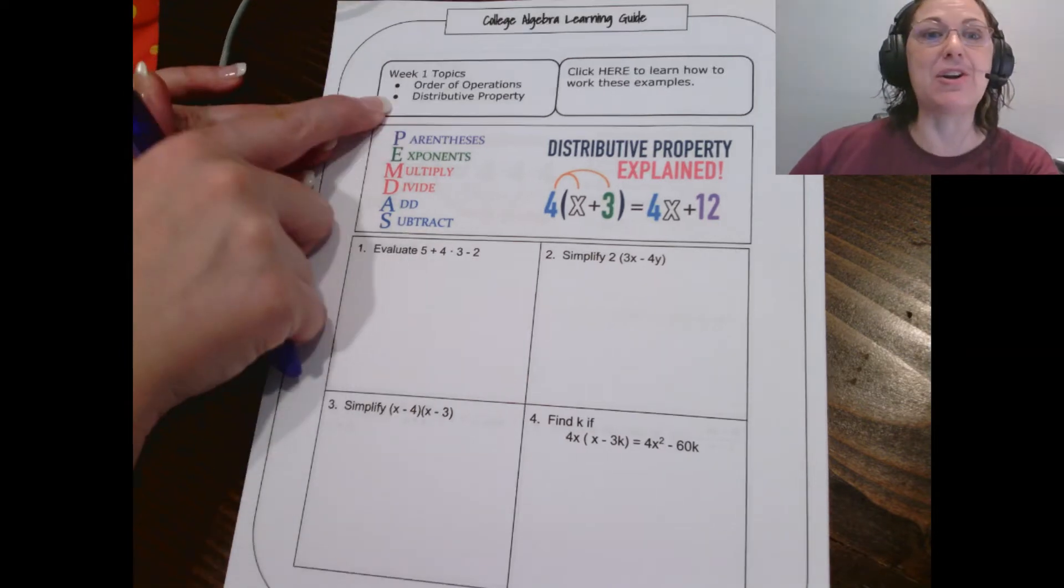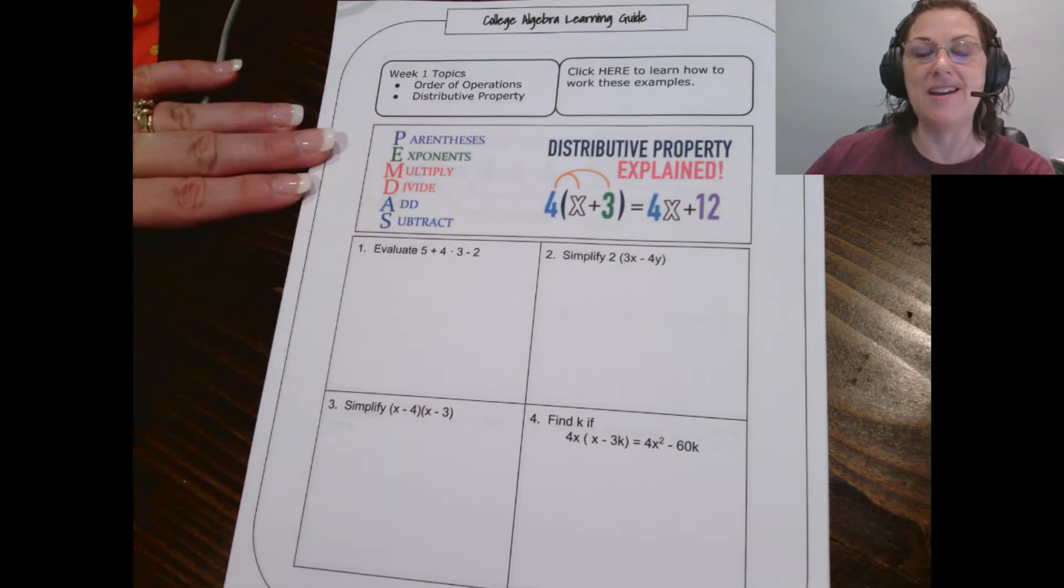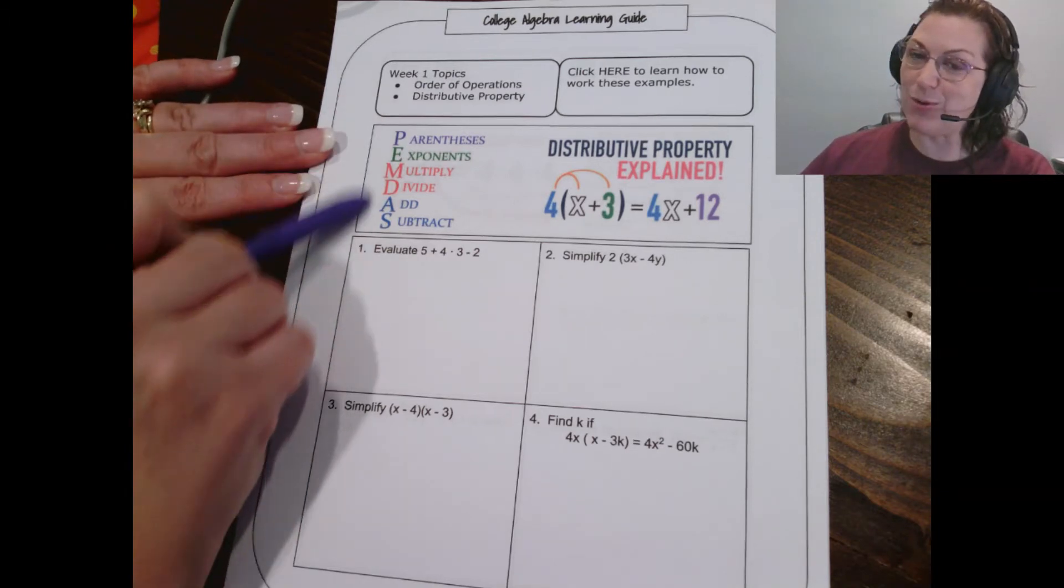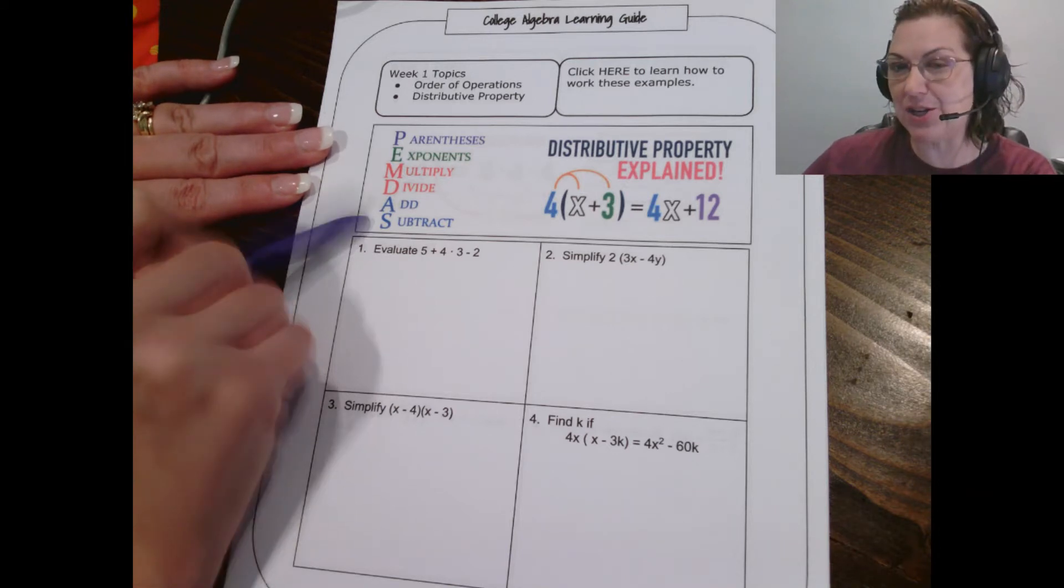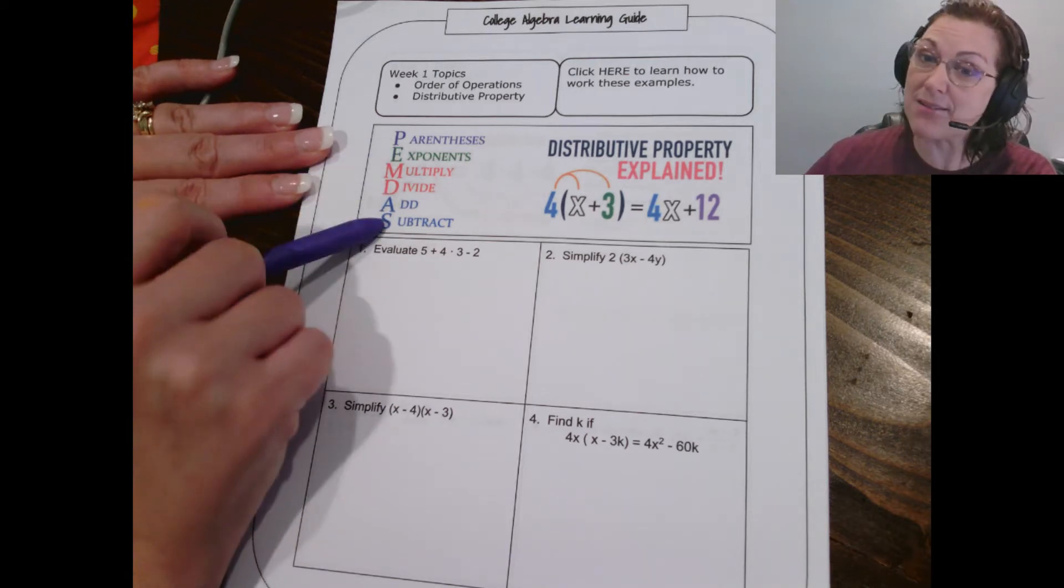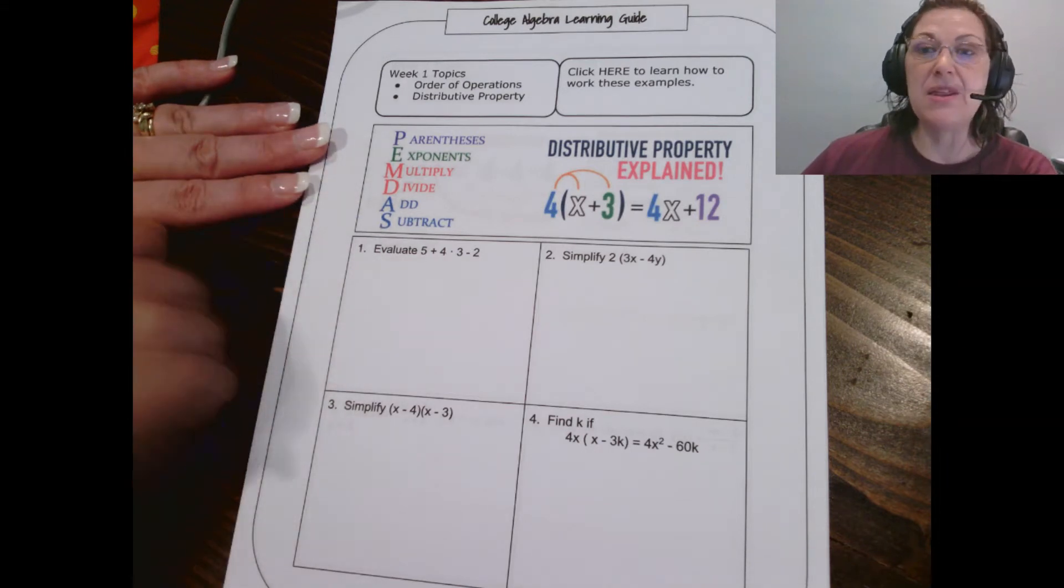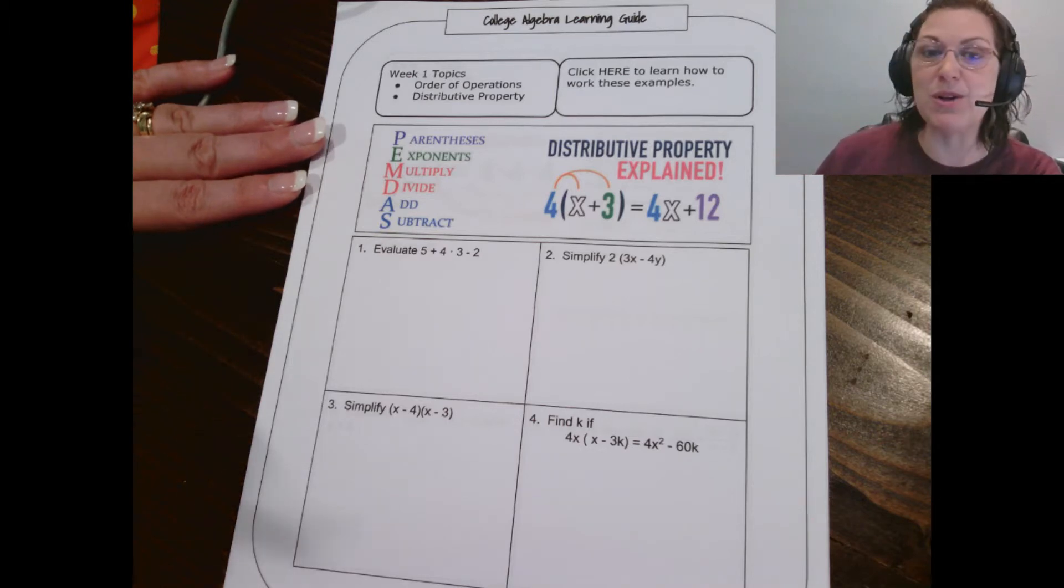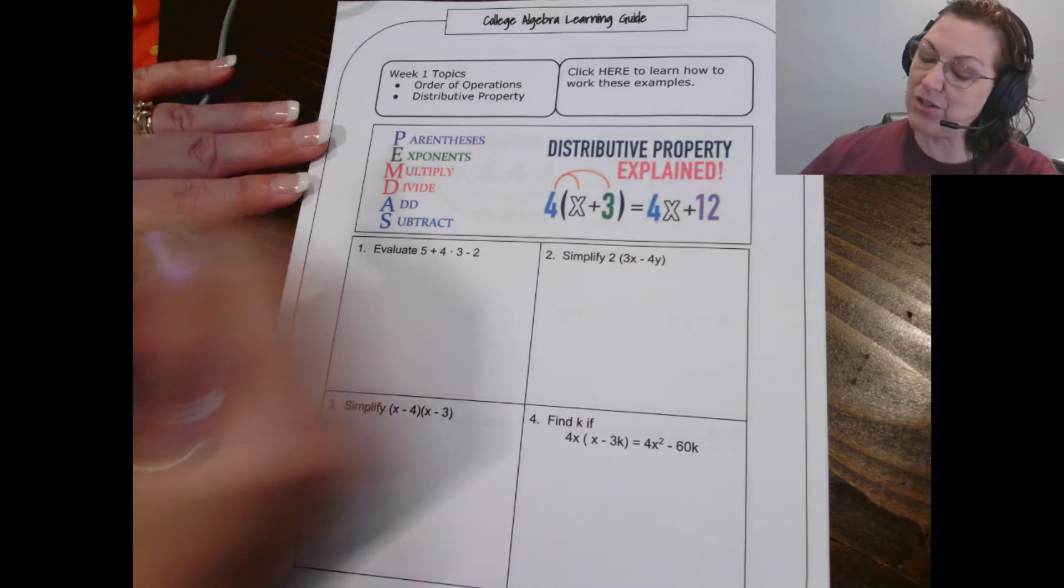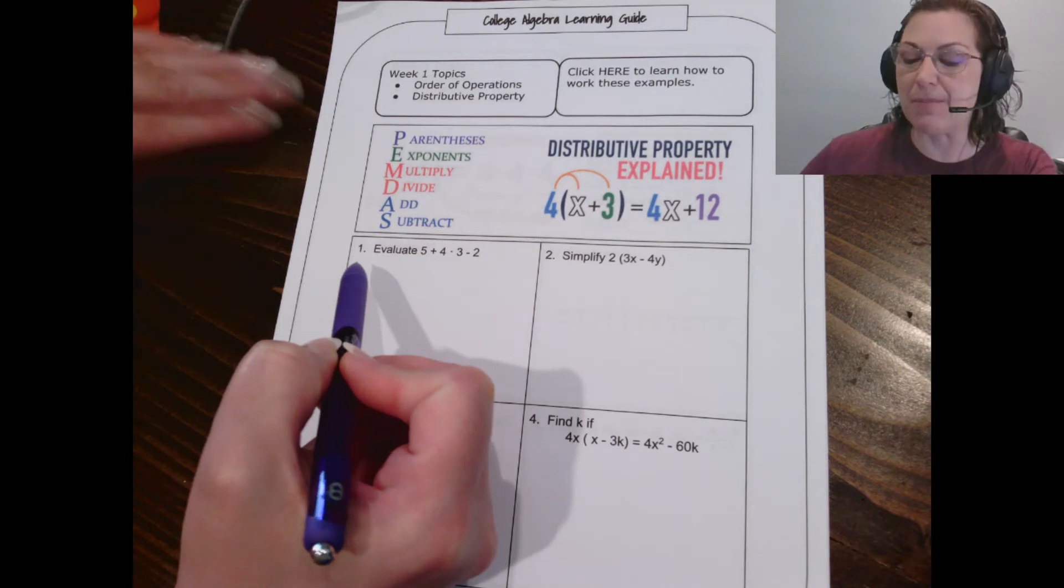These four problems are going to focus on the order of operations and the distributive property. So, I have given you the order of operations just in case it's been a while. This may look familiar to you, may have learned it as PEMDAS, or possibly as, please excuse my dear Aunt Sally. That was kind of those mnemonic devices that we use in order to help students remember, but it tells us the order in which we should solve problems. So, let's take a look at problem number one and follow along the order of operations there.